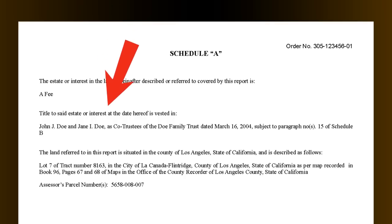The next item — 'title to said estate or interest at the date thereof is vested in' — describes how your property is held. In this particular case: John J. Doe and Jane I. Doe as co-trustees of the Doe Family Trust dated March 16th, 2004. This is your vesting for this particular transaction that is currently happening.